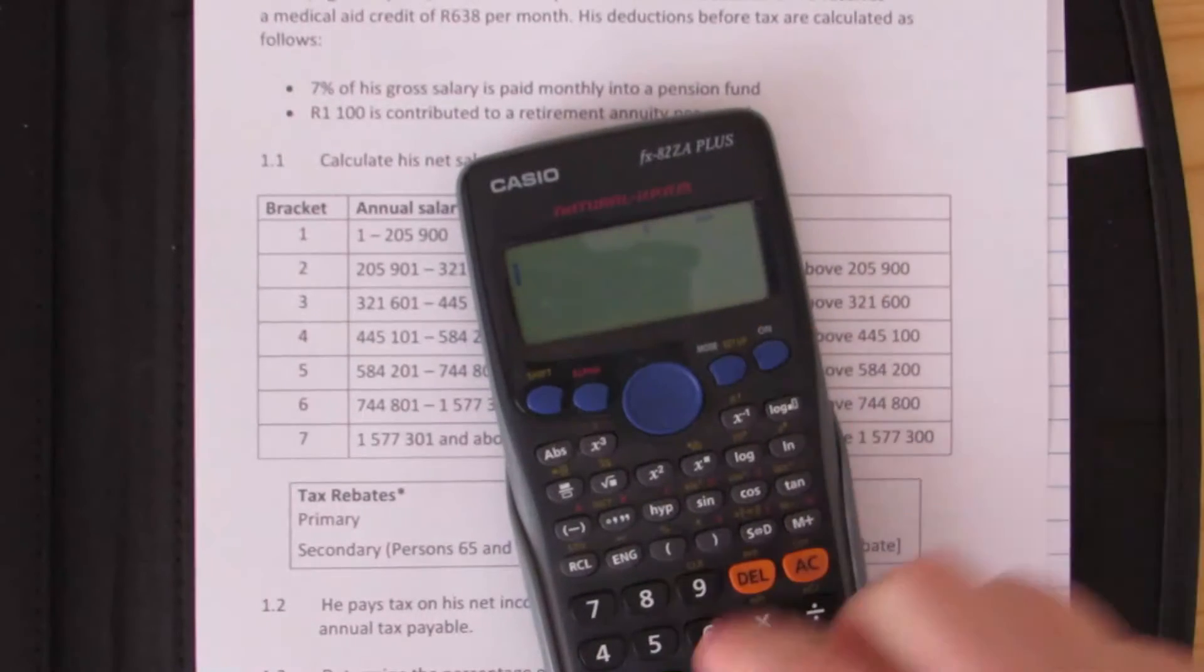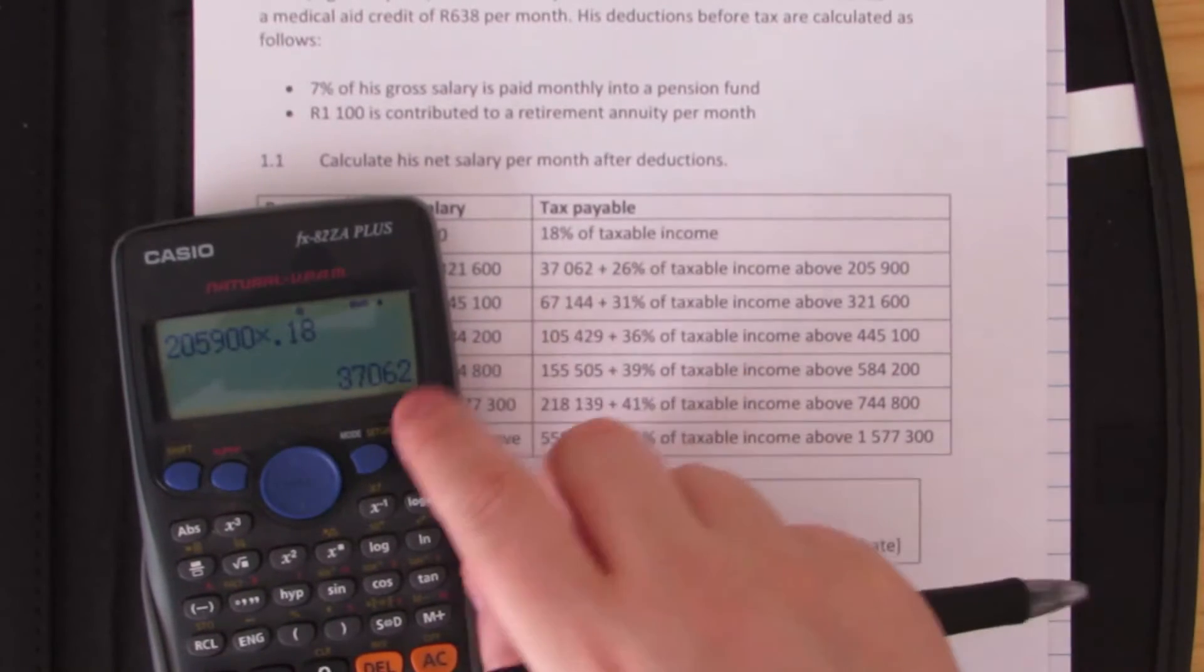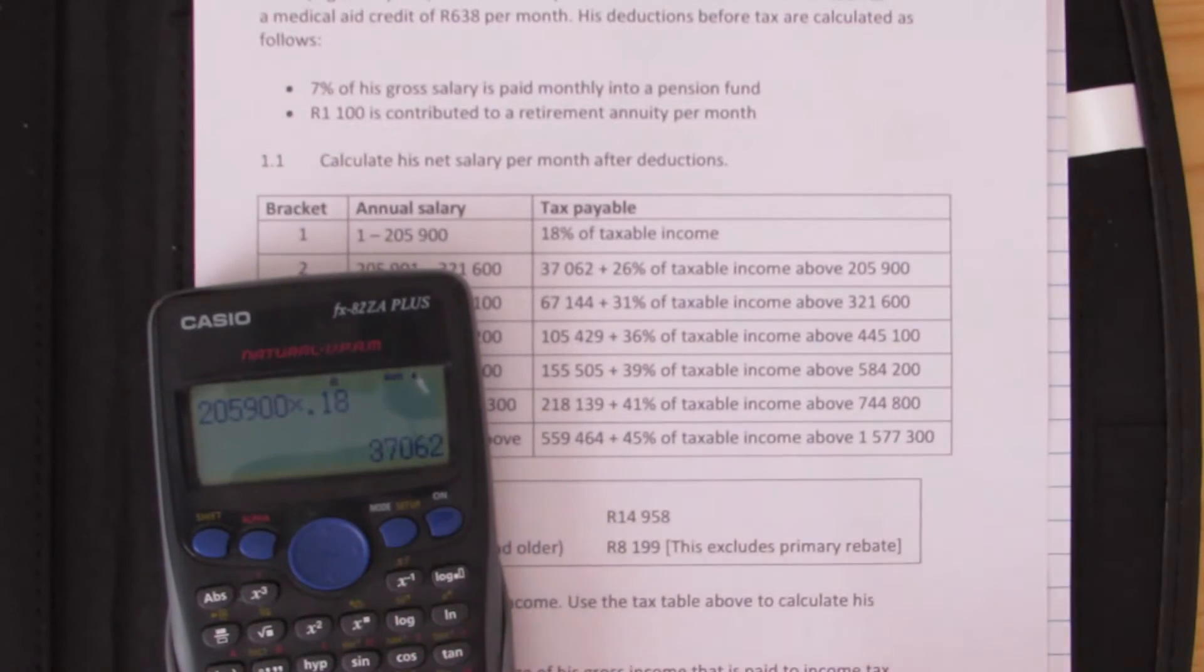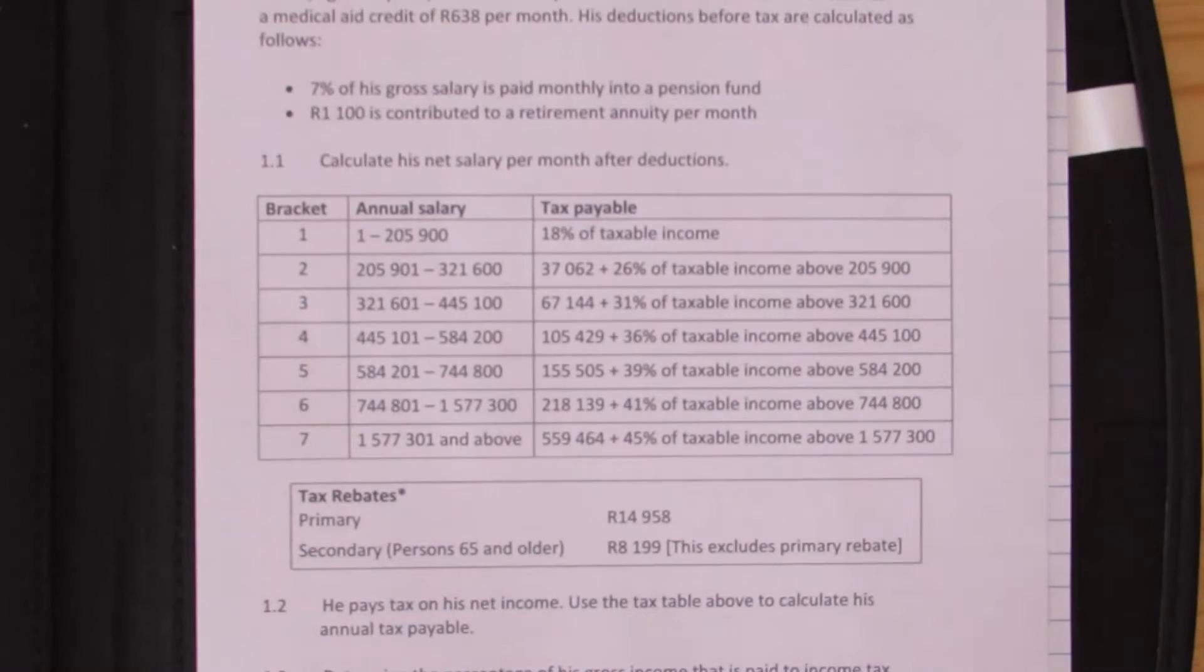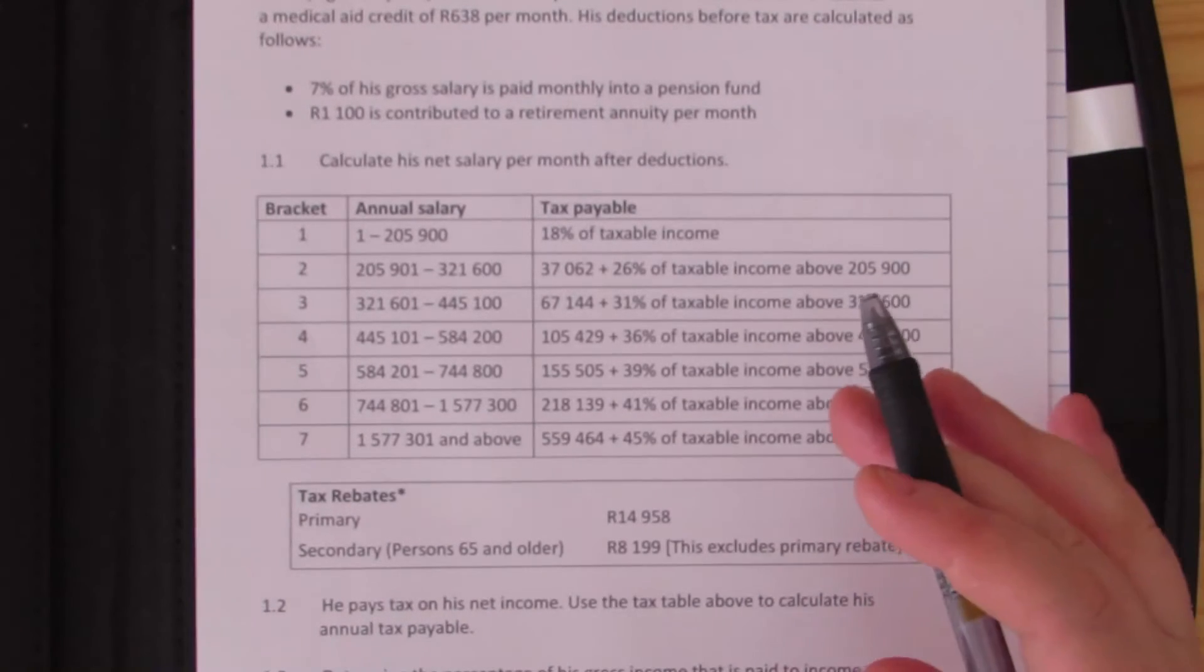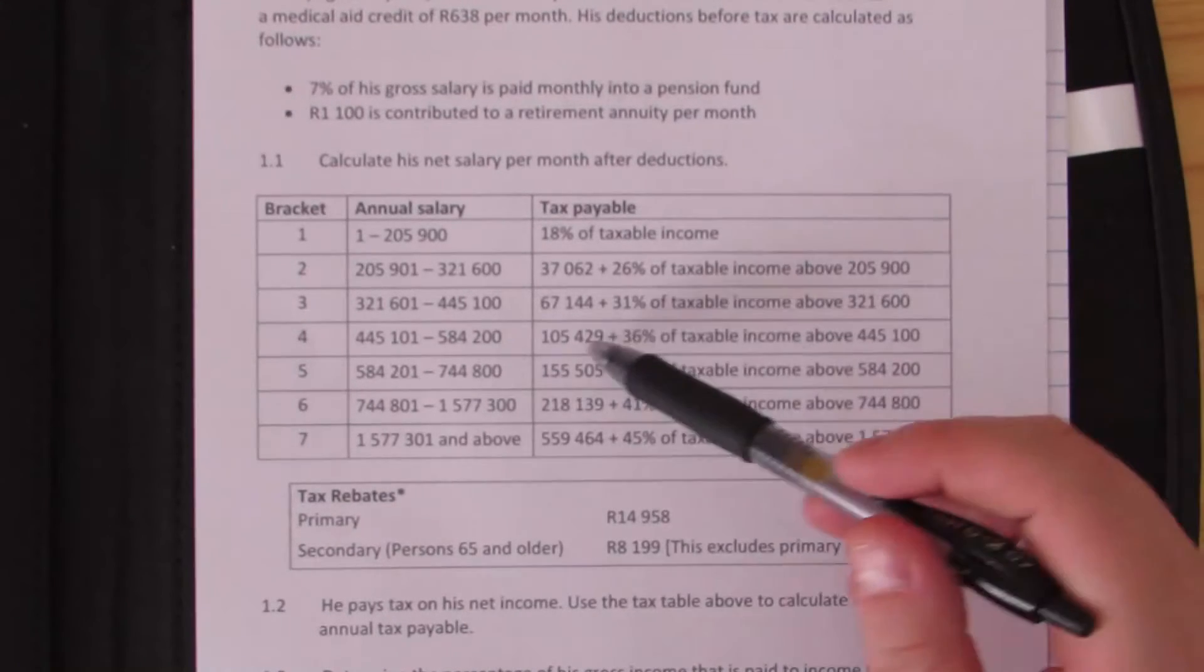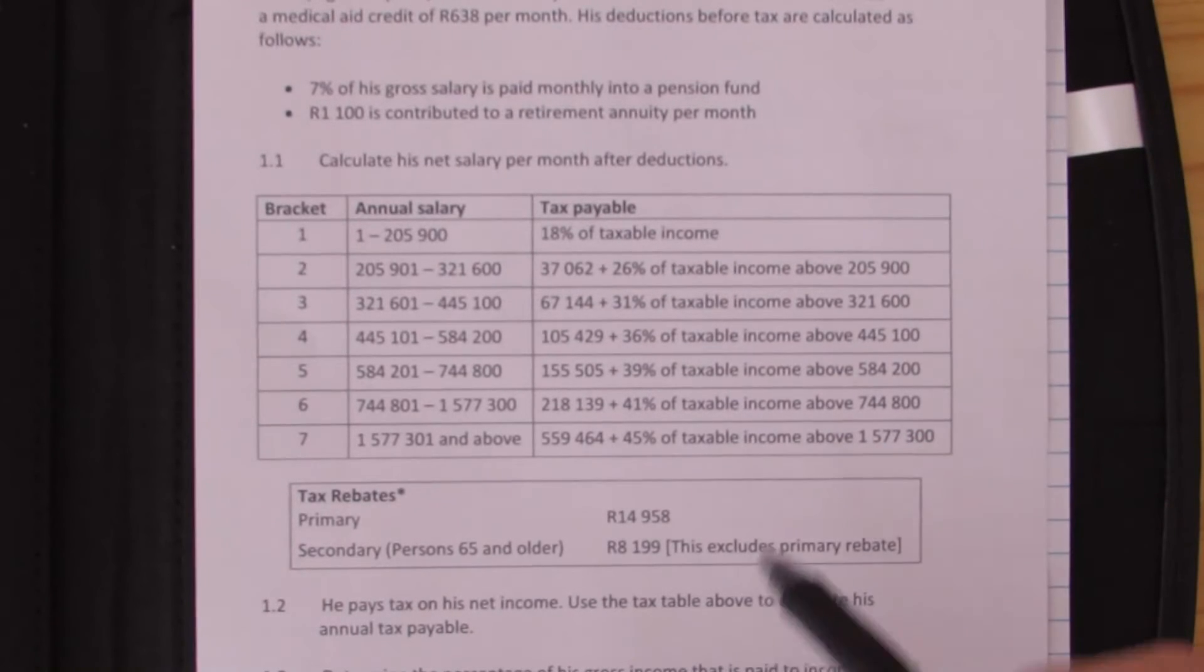If I go 205,900 and multiply by 18%, you'll see that is the same fixed amount for both of these. That's how it works because this whole table is to make things a lot more simple for you to work with, so you don't have to calculate all of the steps. This was the maximum amount of the previous tax bracket.